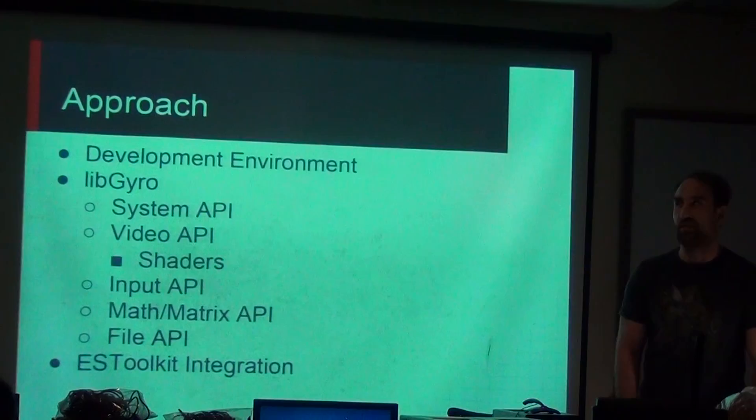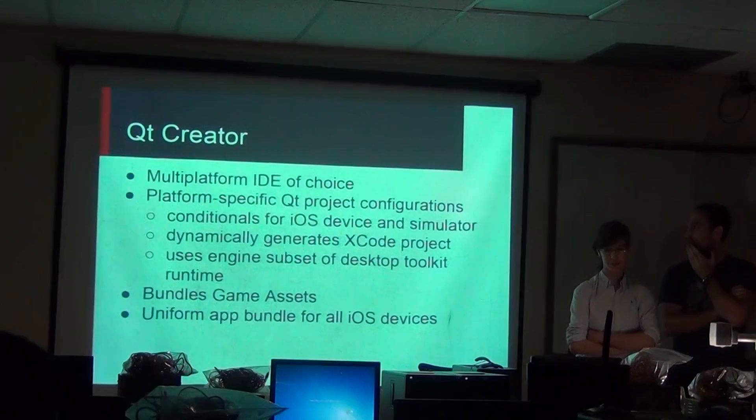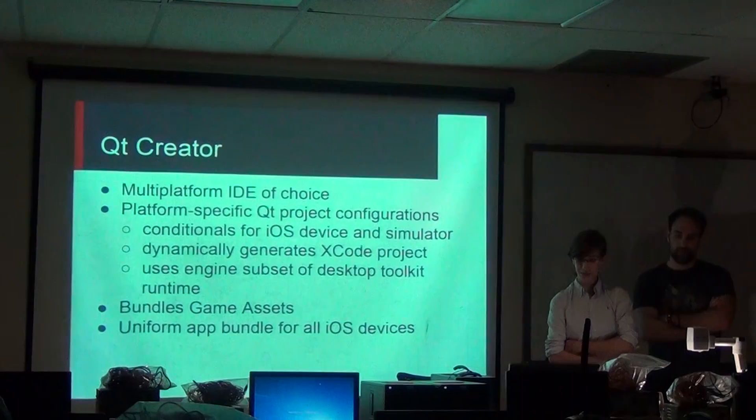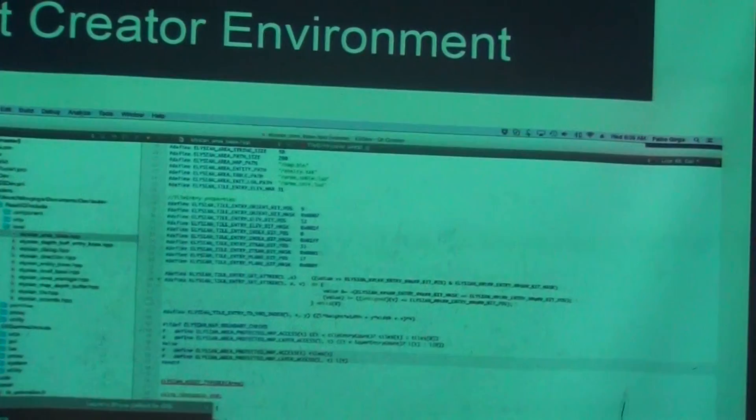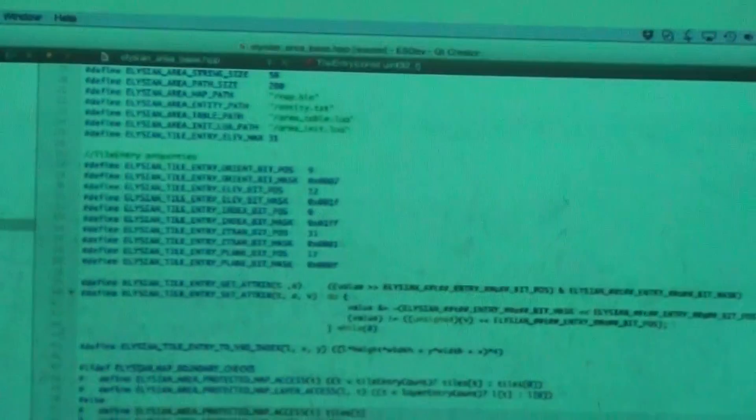The approach that we took, this is really hard for me to get under 10 minutes, so if we talk too long just show us up. We wanted to use Qt Creator since we're using it for all of the other platforms we're targeting. We set up platform-specific Qt project configurations for the iOS device and simulator. This image shows the Qt Creator project in the corner where you can see that you can select different devices to build for. It says desktop, iPhone, and iPhone Simulator.